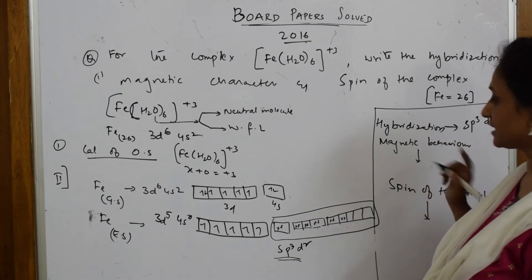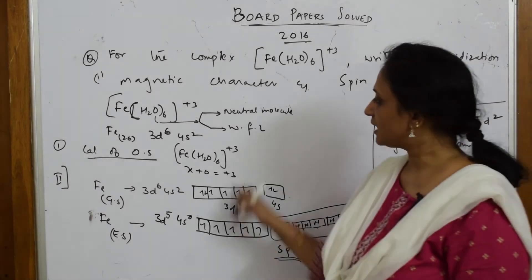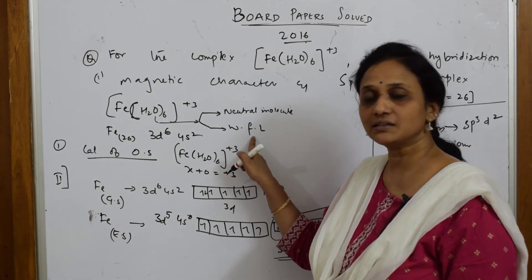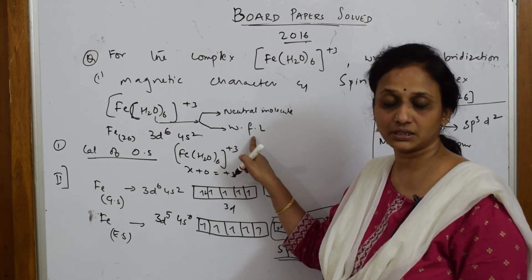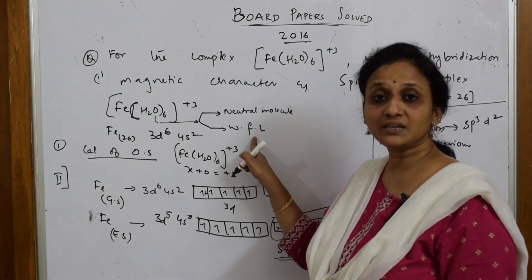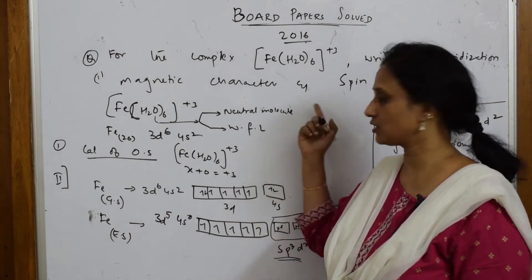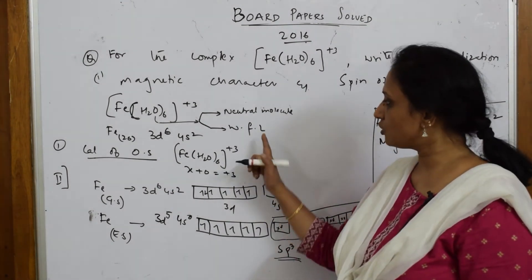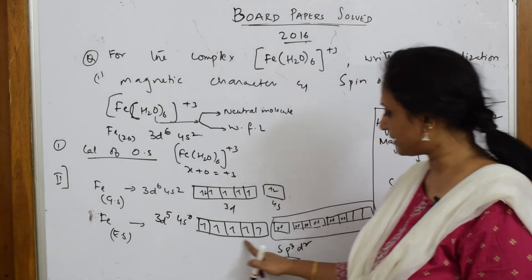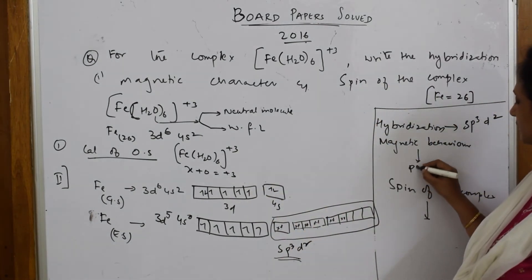The hybridization I got is sp3d2. Now for magnetic behavior: water is a weak field ligand, so it will not pair up. The pairing energy is less than delta naught, so it will not pair up.